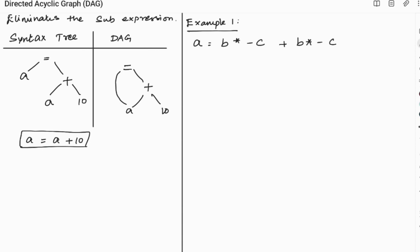And now we will see a simple example for constructing the DAG for a basic block which I have given here. So a sequence of statements. So here we have a equal to b star minus c and again b star minus c. So from this particular statement it is very clear that b star minus c and b star minus c has been repeated again. So we will be making things very simple.